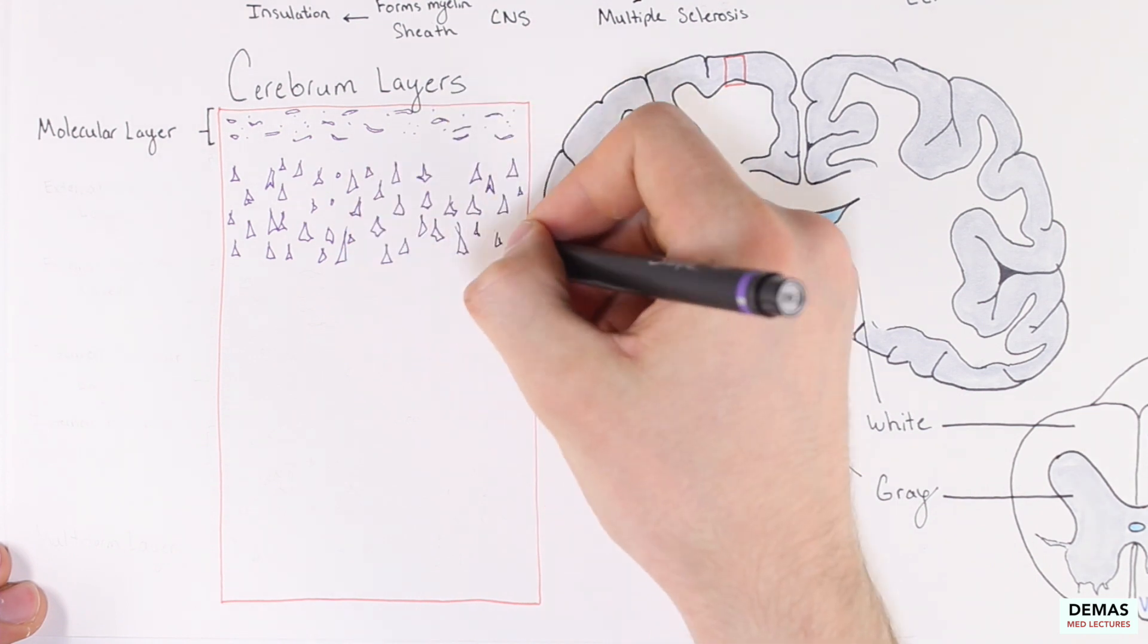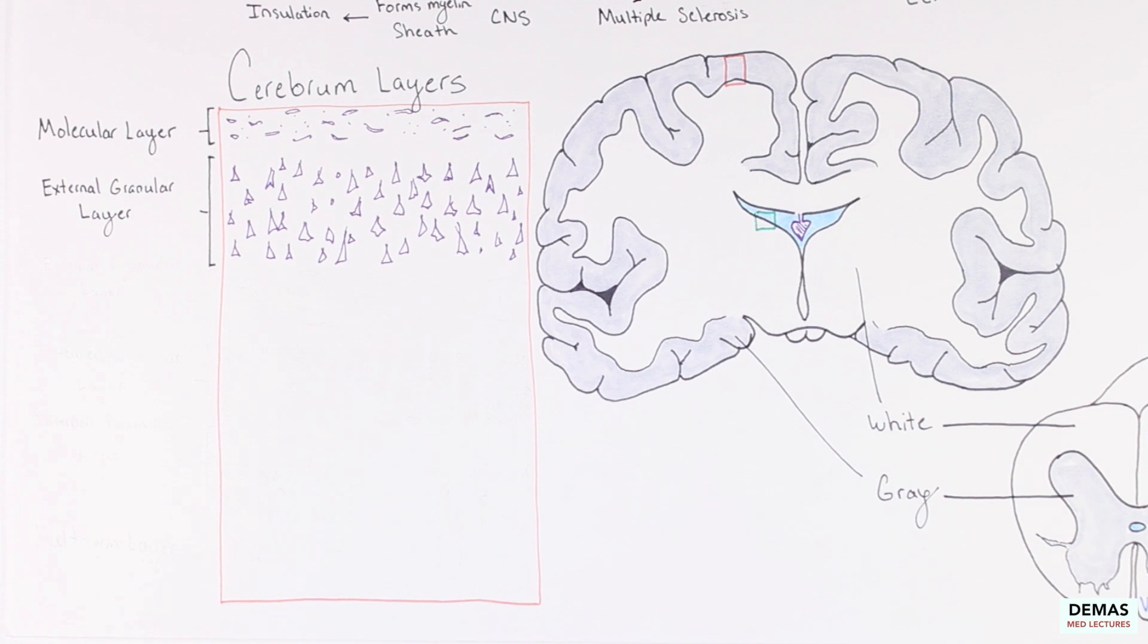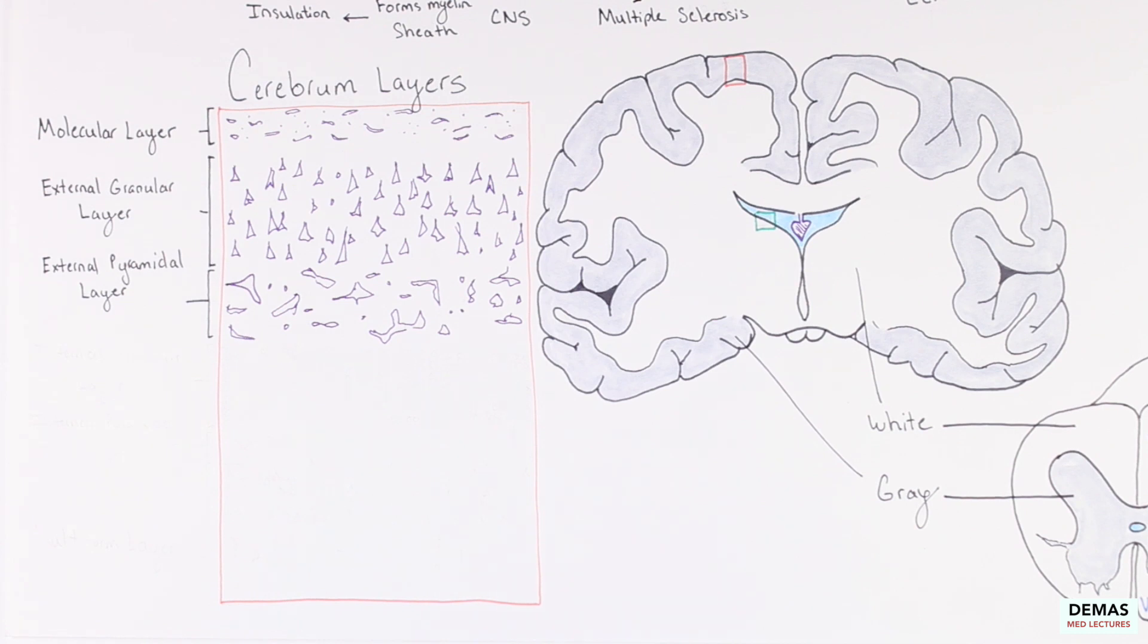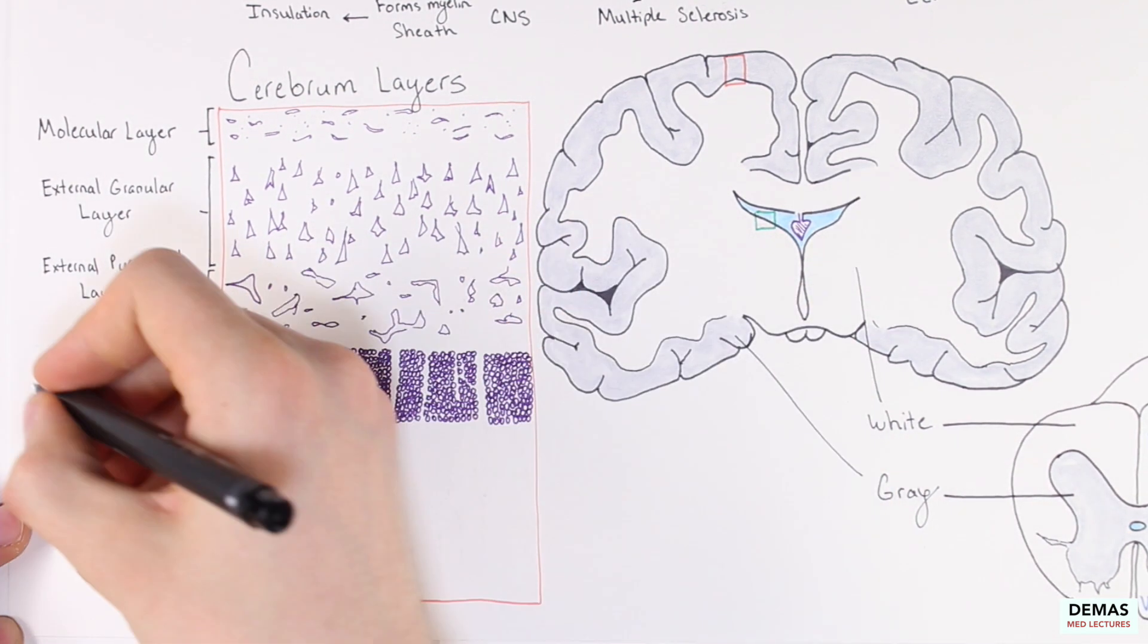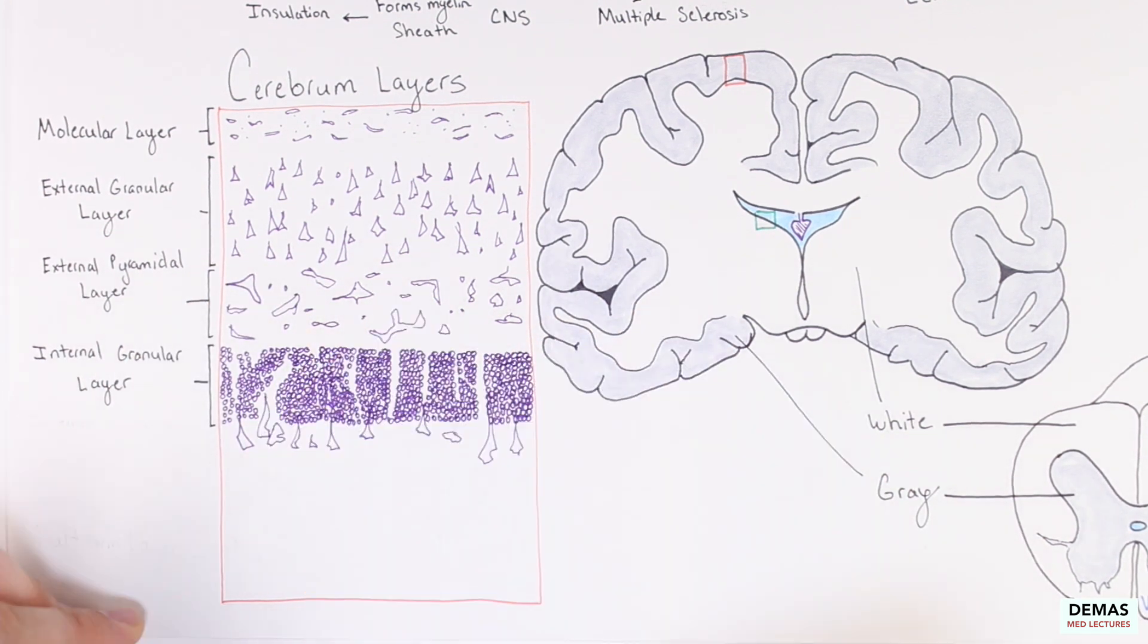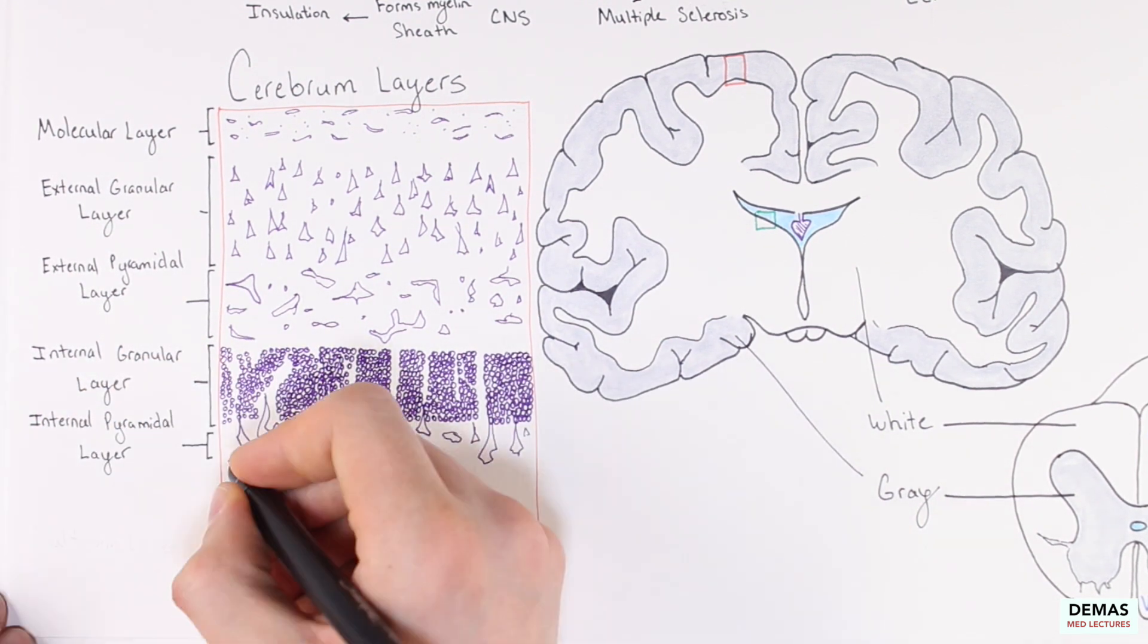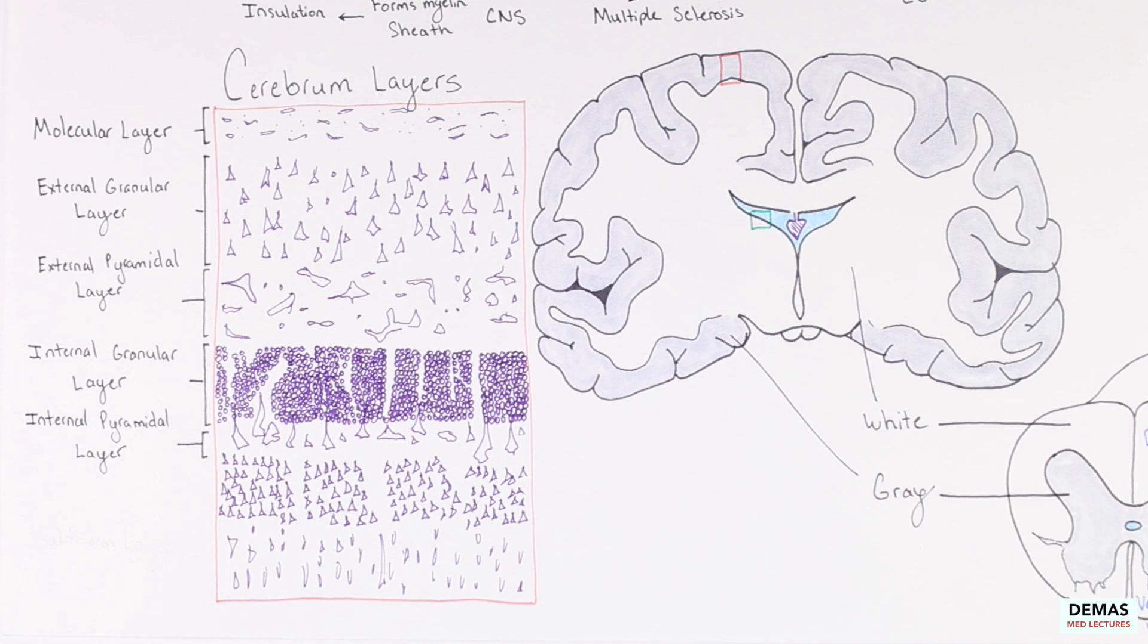The second layer of the cerebral cortex is the external granular layer, which contains small pyramidal neurons. The following layer is the external pyramidal layer, which contains predominantly small and medium-sized pyramidal neurons. The fourth layer is the internal granular layer, which contains different types of stellate neurons. The fifth layer is the internal pyramidal layer, which contains large pyramidal neurons. The final layer is the multiform layer, or the polymorphic layer, which also contains large pyramidal neurons and many small spindle-like pyramidal and multiform neurons.